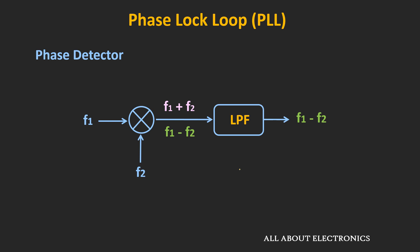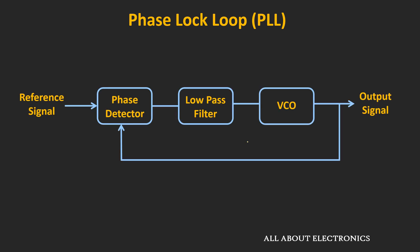In the frequency domain, when we multiply the two signals, we get two terms: the summation of the two frequencies and the difference between the two frequencies. The high-frequency component can be eliminated using the low-pass filter, while the difference between the two frequencies contains the phase difference. When this signal is passed through the low-pass filter, it provides the required error voltage for the VCO, making it possible to lock the VCO to the input frequency.